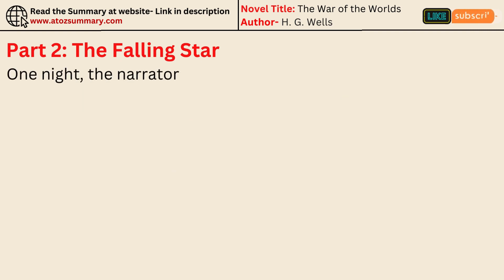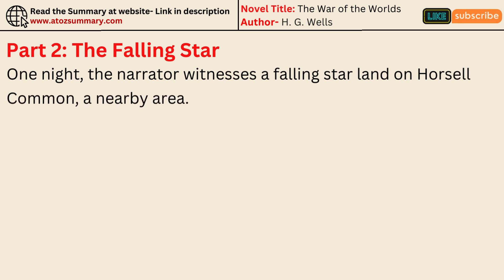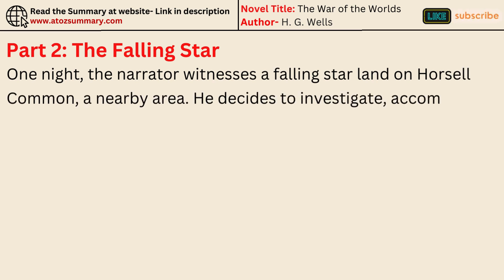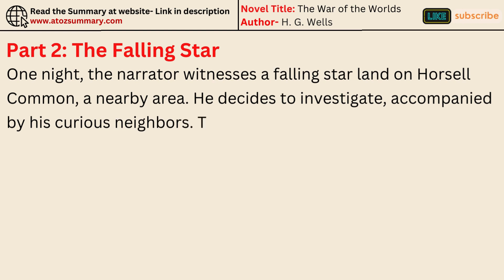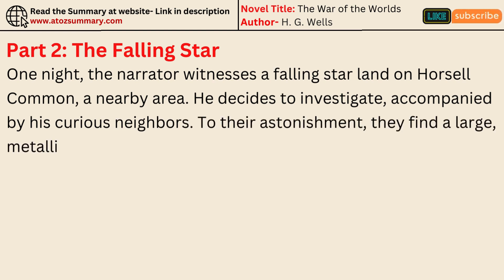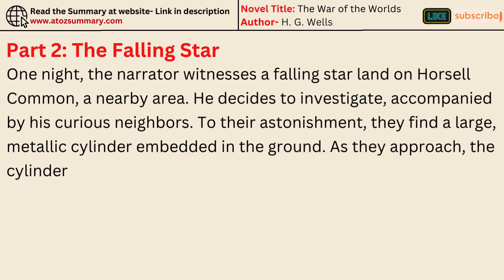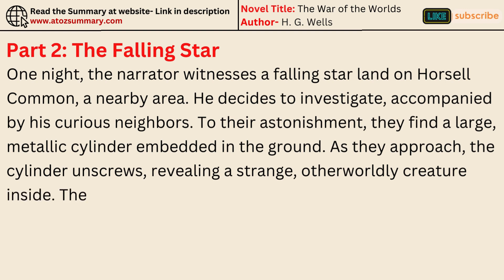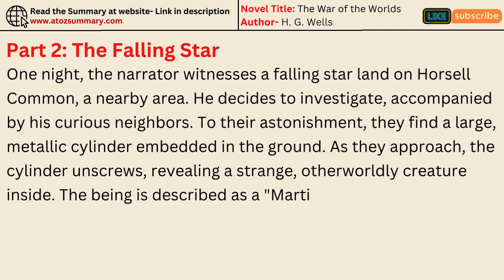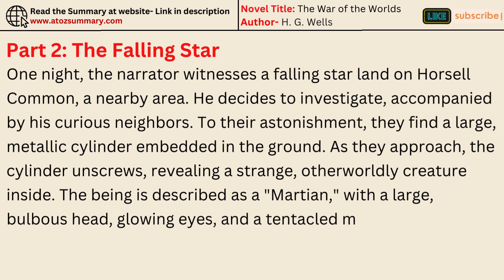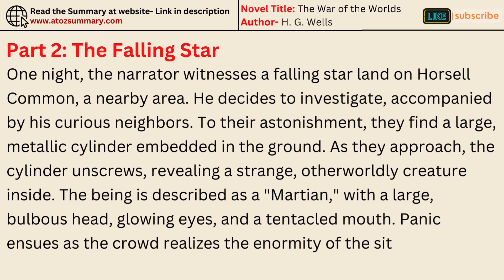One night, the narrator witnesses a falling star land on Horsell Common, a nearby area. He decides to investigate, accompanied by his curious neighbors. To their astonishment, they find a large metallic cylinder embedded in the ground. As they approach, the cylinder unscrews, revealing a strange, otherworldly creature inside. The being is described as a Martian, with a large bulbous head, glowing eyes, and a tentacled mouth. Panic ensues as the crowd realizes the enormity of the situation.